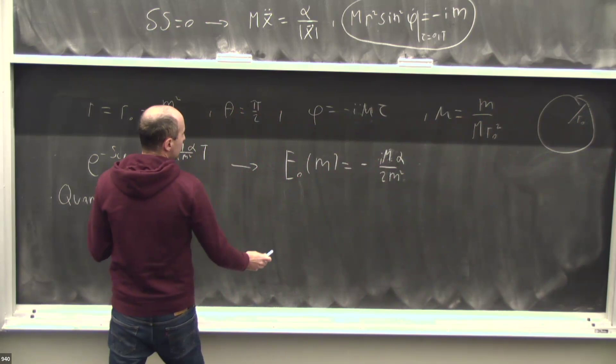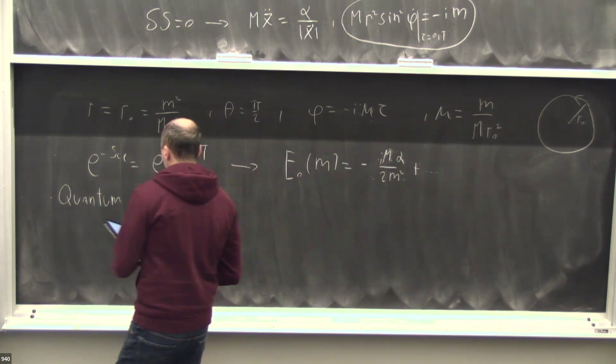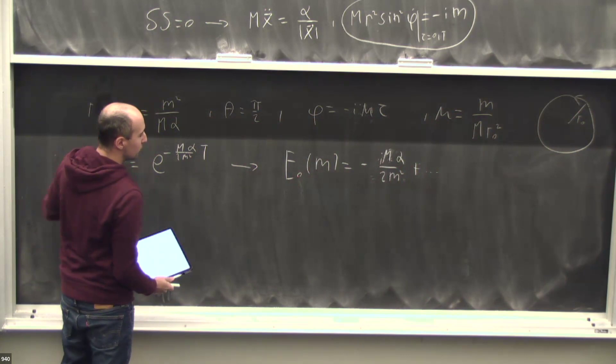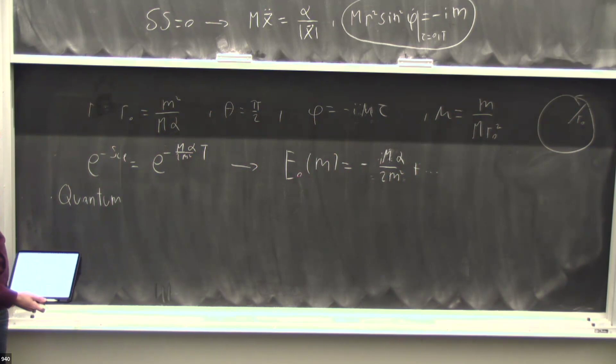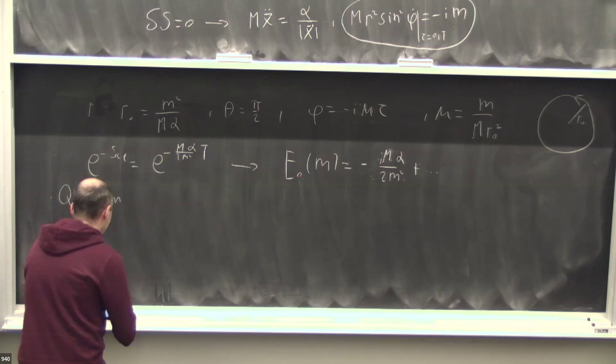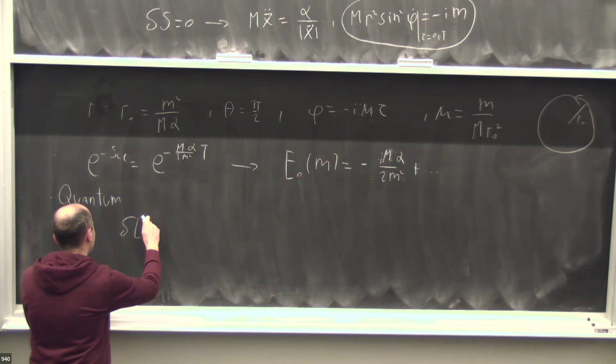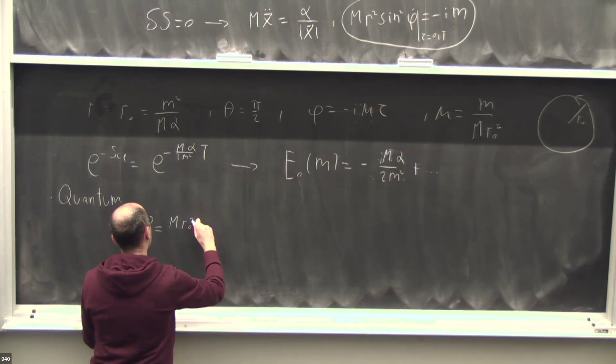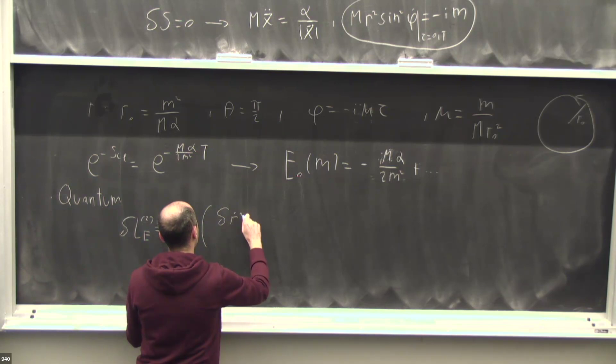I compute the quantum corrections by expanding the Lagrangian around the classical solution to quadratic order. This gives something very simple.